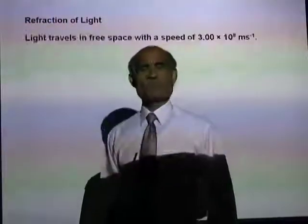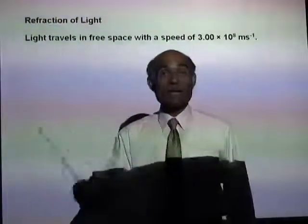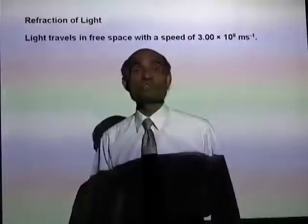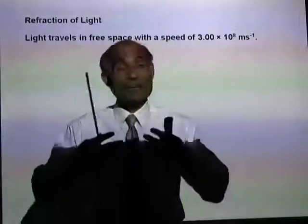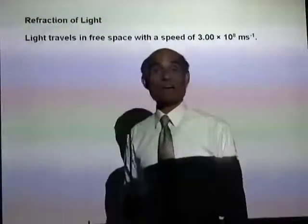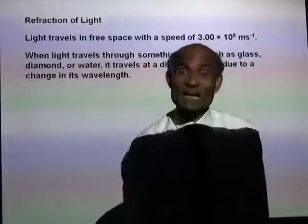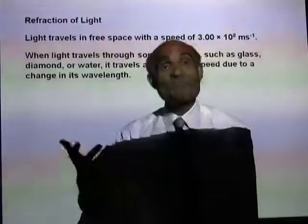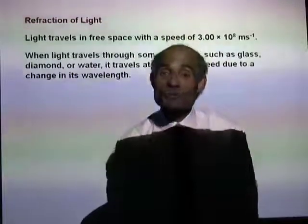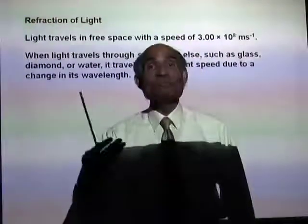Let's now talk about refraction of light. Light travels in free space with a speed of 3 times 10 to the 8 meters per second. In fact, all electromagnetic radiations travel with the same speed in vacuum. But if you allow light to pass through any other medium such as glass, water, or any transparent medium, its speed will reduce.